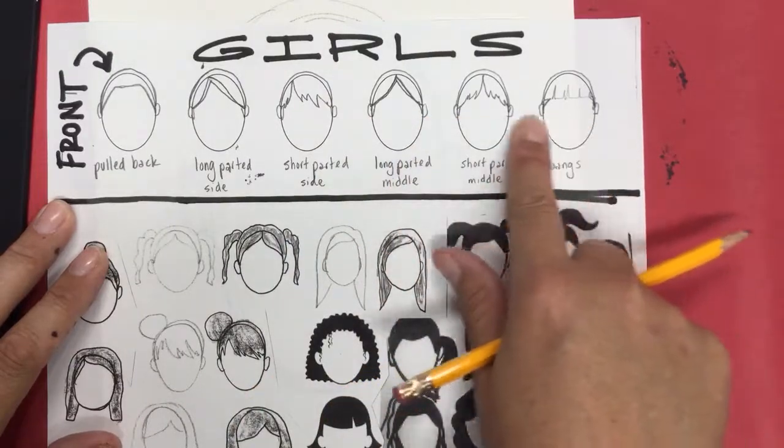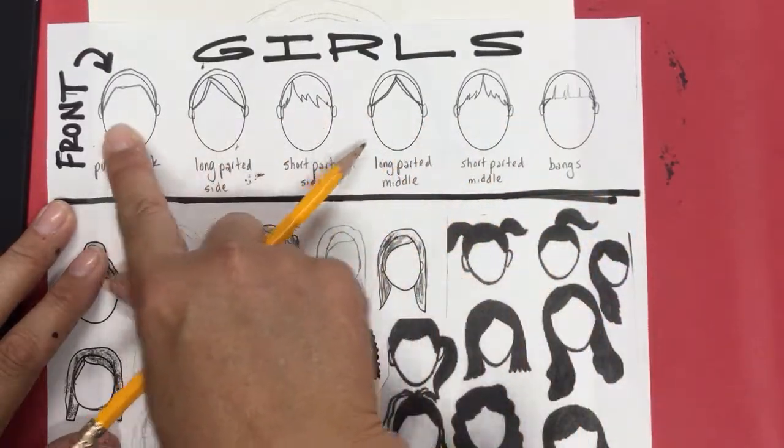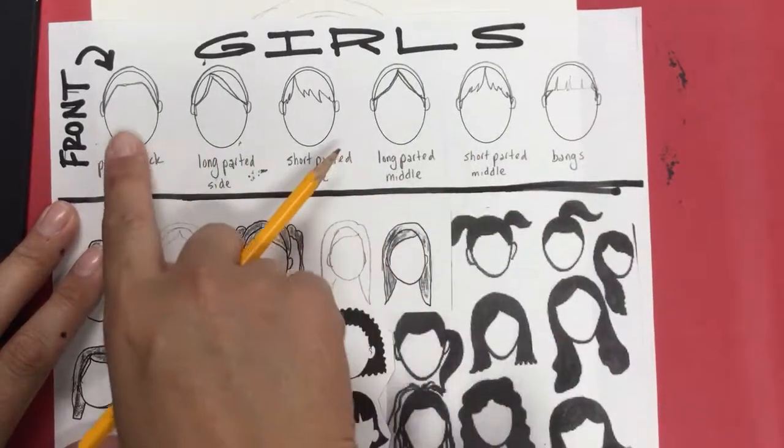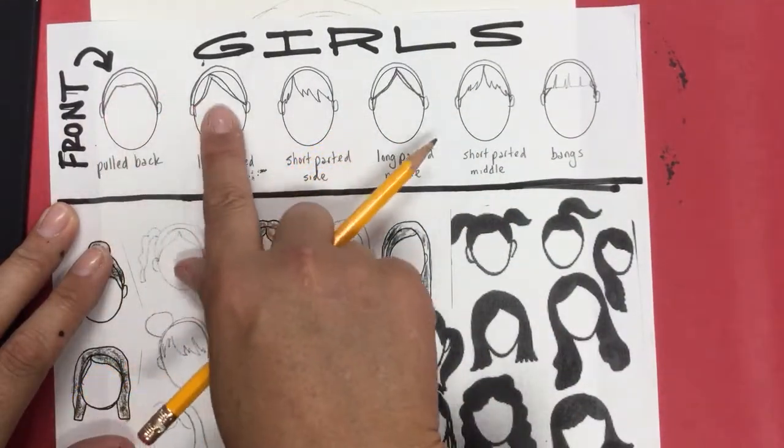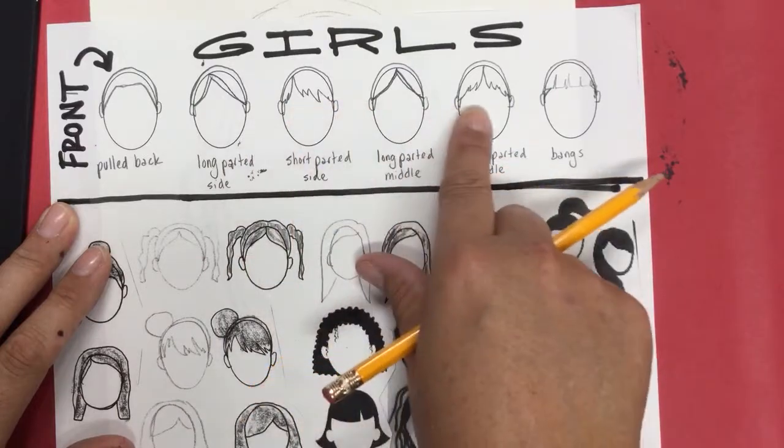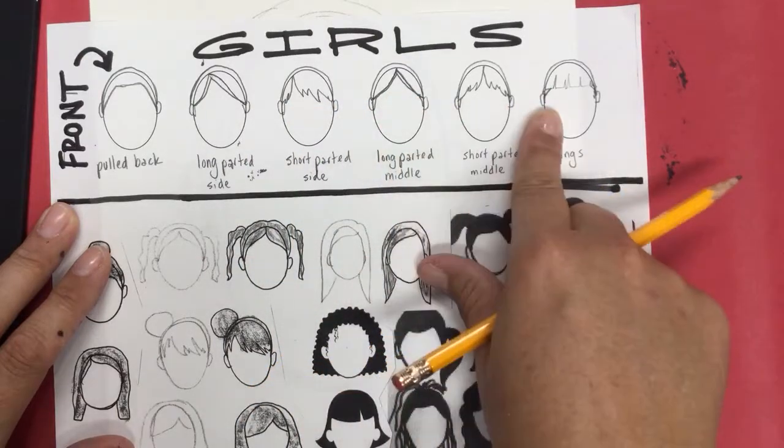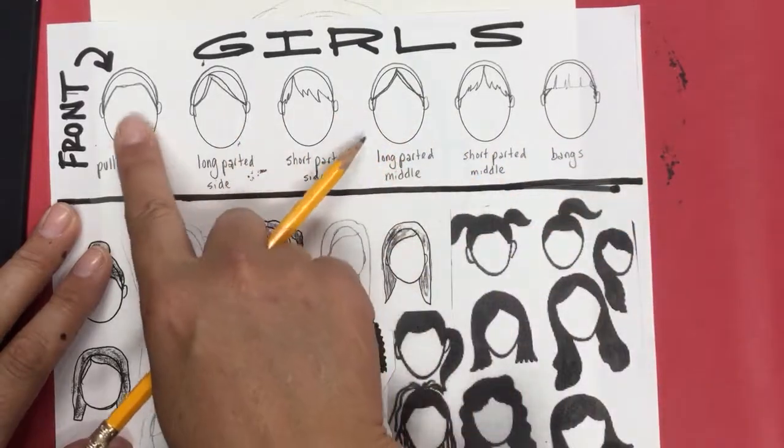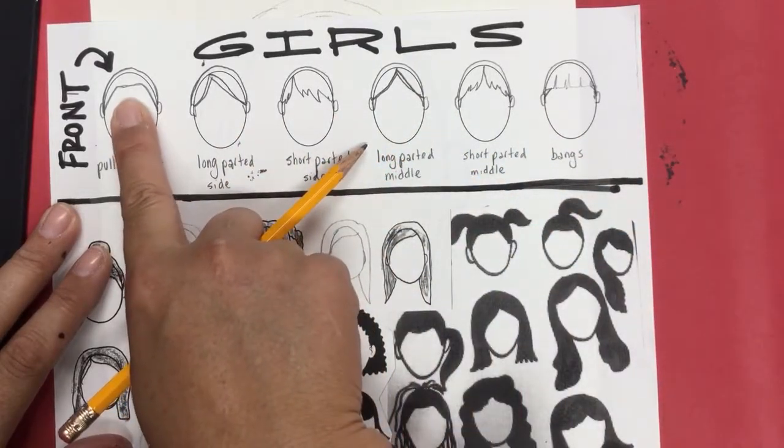If you look up here girls where it says front, you're gonna see that this is how you would look if your hair was pulled back or if your hair was short like mine. Most of you have it pulled back or you have it parted or you have short bangs or it's part in the middle or long parted in the middle. You're gonna find the one that you think looks most like you.